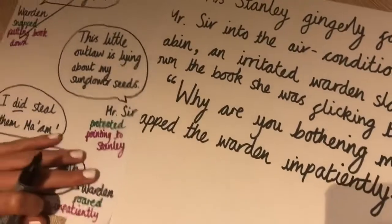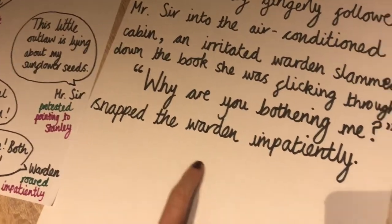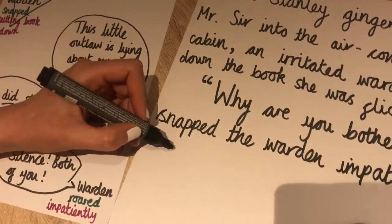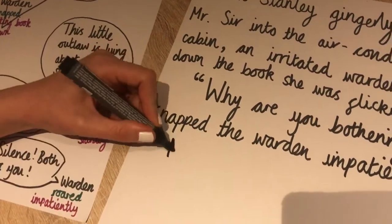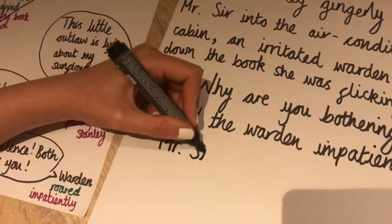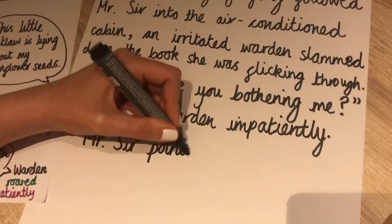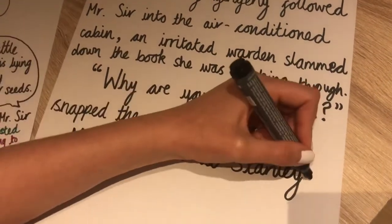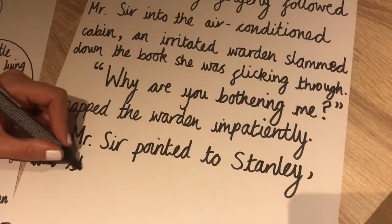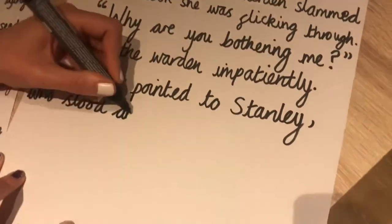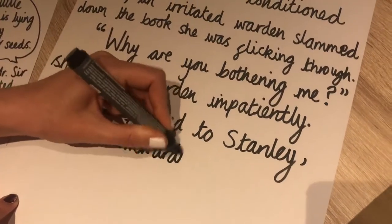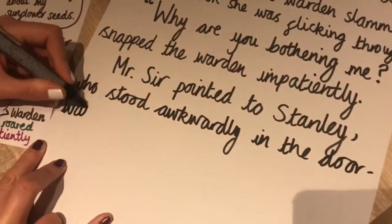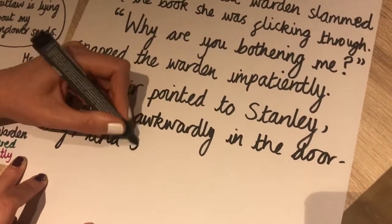Now I'm going to move on to Mr. Sir. This time, instead of having the reporting clause at the end of the sentence, I'm going to have it at the beginning. So it's a new speaker, so a new paragraph. I'm going to say: 'Mr. Sir pointed to Stanley' — I might put a little relative clause in here actually — 'who stood awkwardly in the doorway, and protested.'